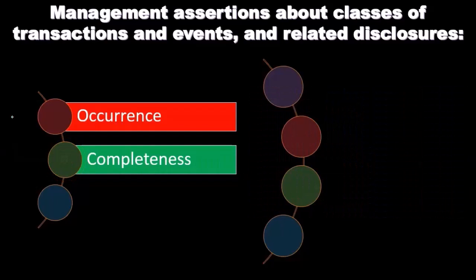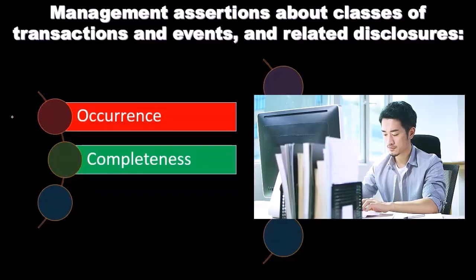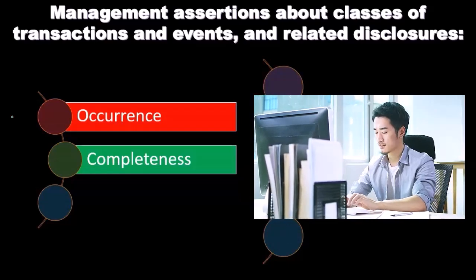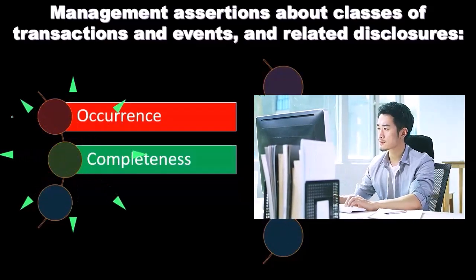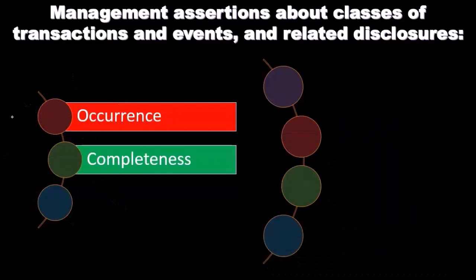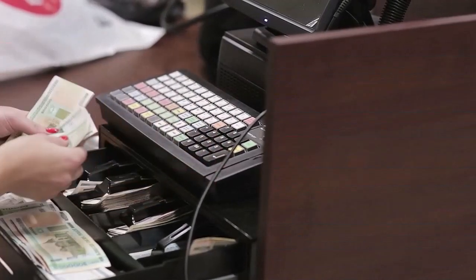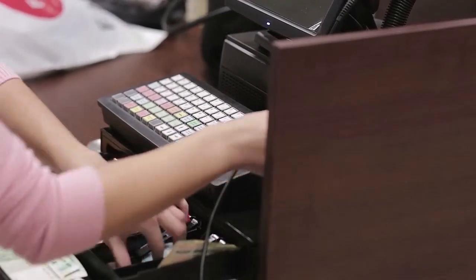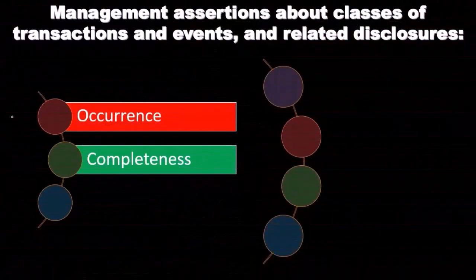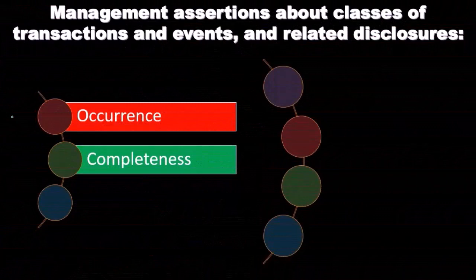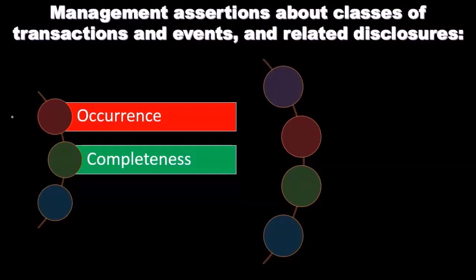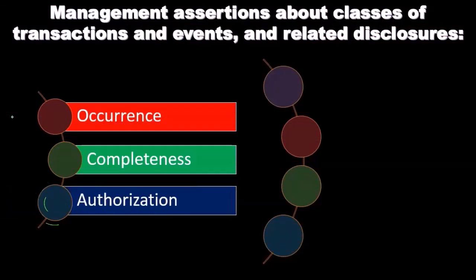Completeness: all transactions and events that should have been recorded have been recorded, and all related disclosures that should have been included in the financial statements have been included. We're looking at the other side of things — could it be the case that a large expenditure that should be on the books somehow isn't there? Depreciation wasn't recorded? Are the financial statements complete?